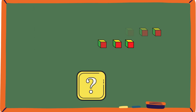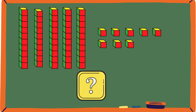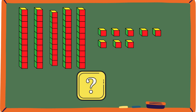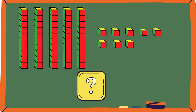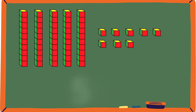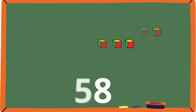Which number do these blocks equal? Let's check: 10, 20, 30, 40, 50, 51, 52, 53, 54, 55, 56, 57, 58. Do you guys think it's 58? Yes — the answer is 58!